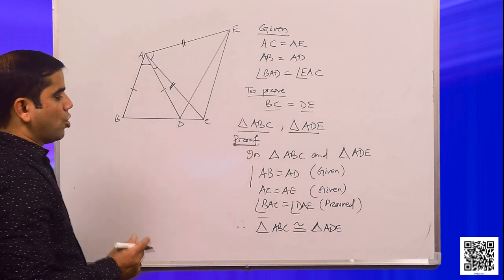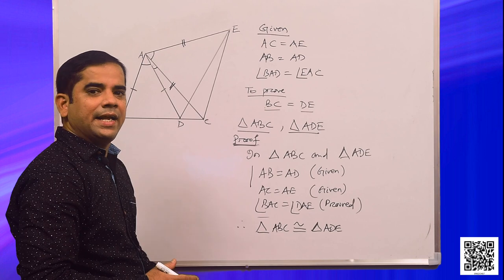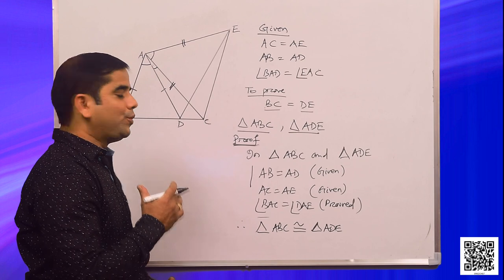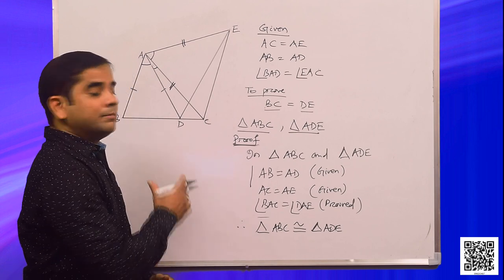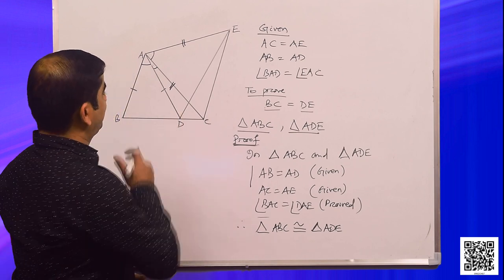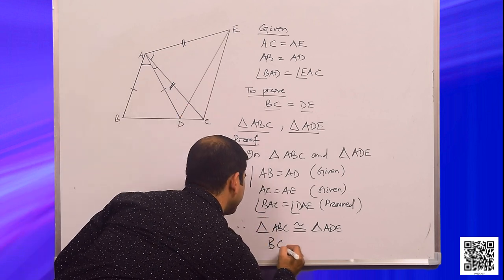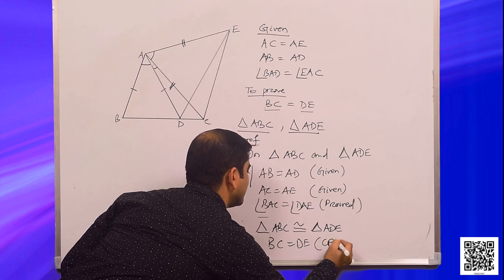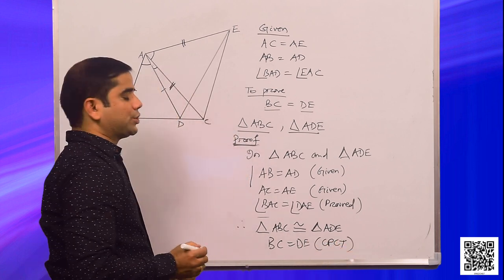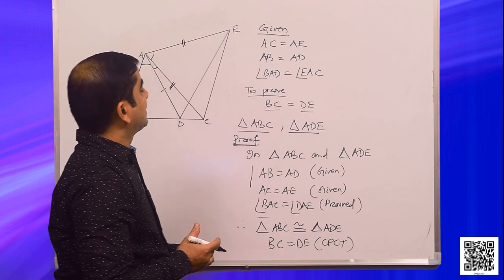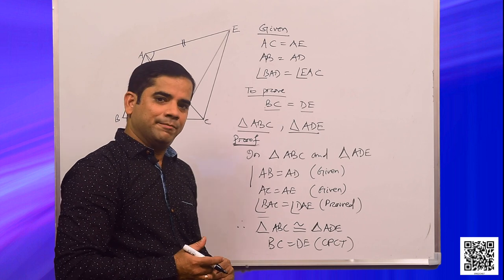As these two triangles are congruent, we can see that BC is equal to DE, because these two sides are corresponding sides of triangles ABC and ADE. Hope you understood. Let us discuss question number 7.